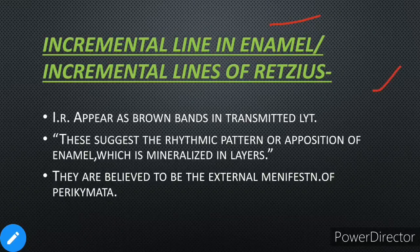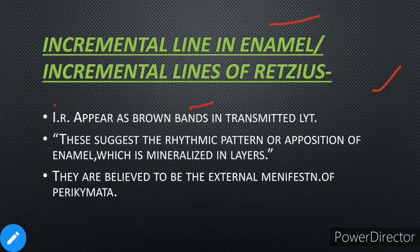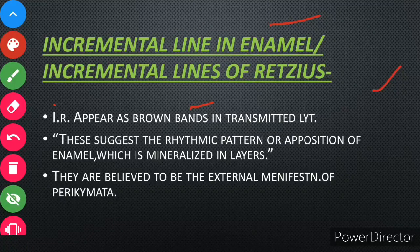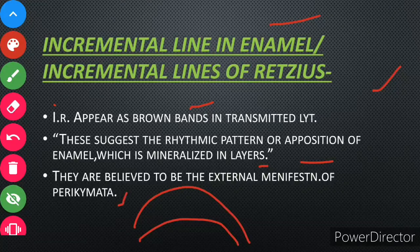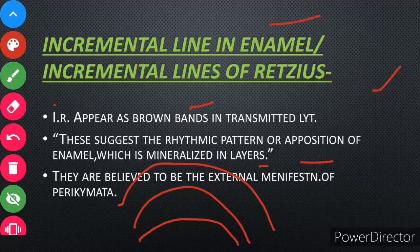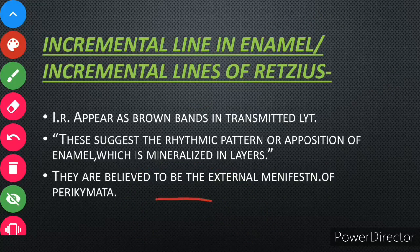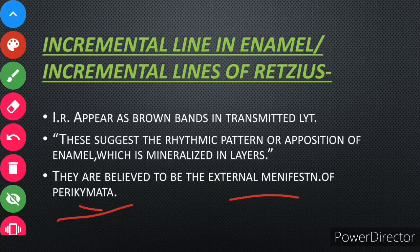Next is incremental lines in enamel, which we call the striae of Retzius. Incremental lines appear as brown bands in transmitted light, suggesting the rhythmic pattern of apposition of enamel which is mineralized in layers. They are believed to be the external manifestation of perikymata, which I explained in the first video. This is a surface structure — basically a hypocalcified structure.